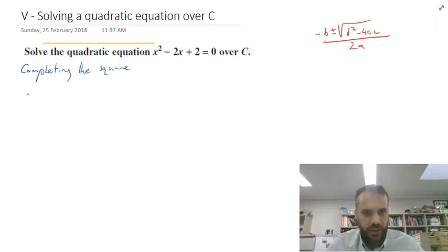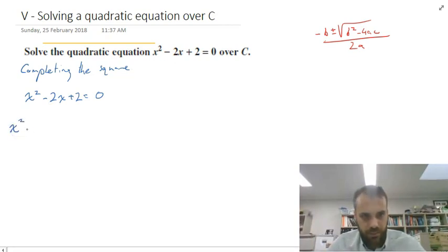So I know x squared minus 2x plus 2 equals 0. I can complete the square here by halving the b value, squaring it, and then adding and subtracting it. So it's going to be x squared minus 2x, halving it gives negative 1, square it gives 1, add it and subtract it. So plus 1 minus 1 plus 2 equals 0.